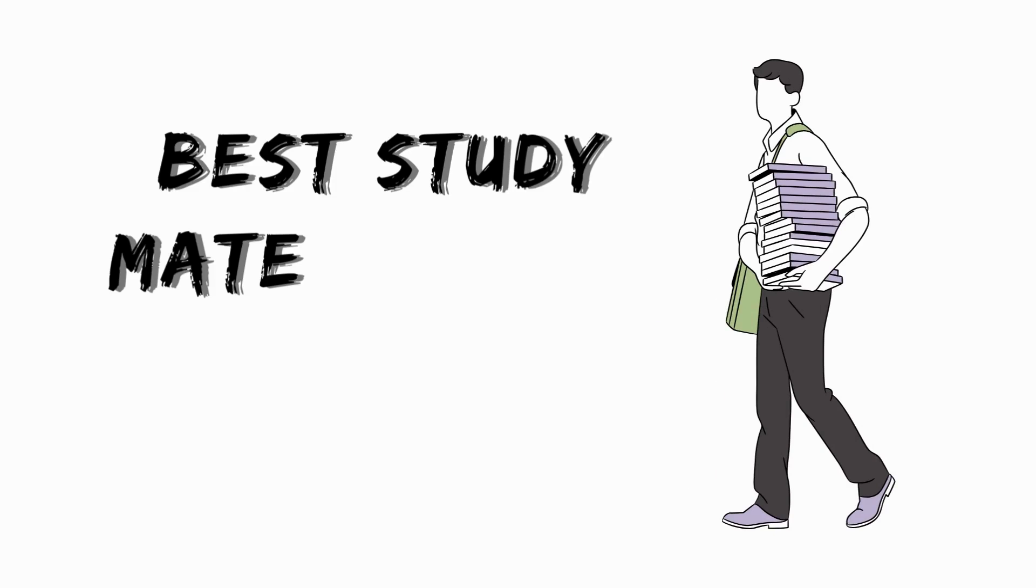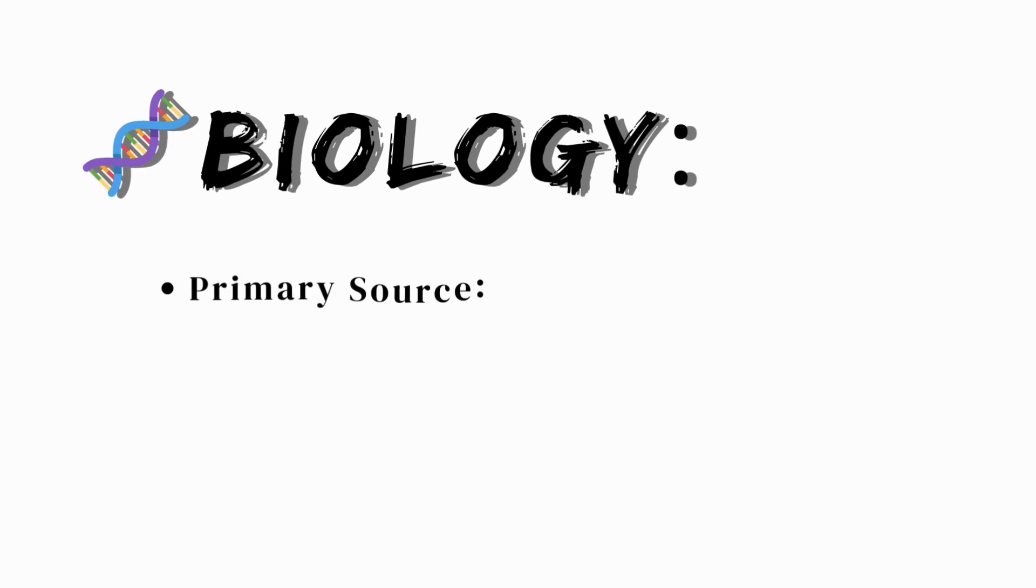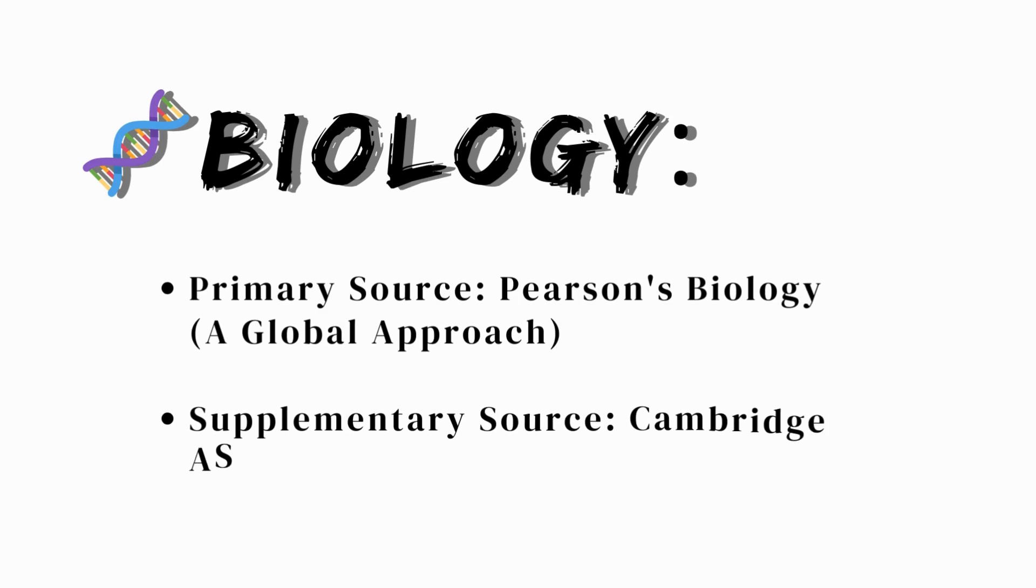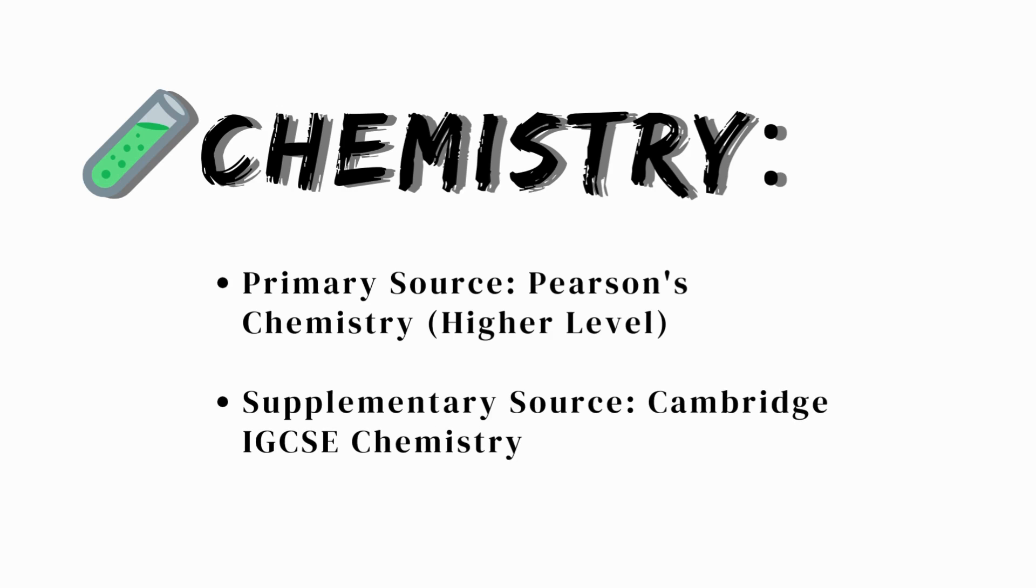First up we have biology. For biology, your primary source I recommend diving into the depths of Pearson Biology, and then after your first revision you may incorporate other resources such as Cambridge AS Level and A Levels Biology that offers a more advanced understanding of the subject matter. Moving on to chemistry, I recommend using Pearson's Chemistry for a solid foundation, and then you may use Cambridge IGCSE Chemistry as an additional supplement as it can serve excellence to your understanding of chemical reactions and principles.